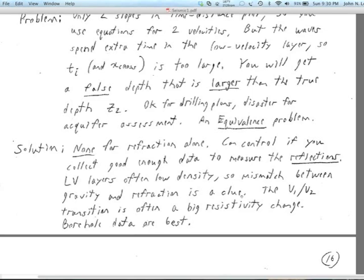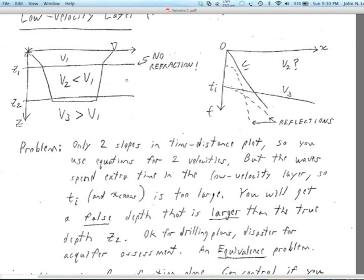Low velocity layers are often low density. So if you calculate basin depths using refraction, and then you calculate basin depths using gravity, and you get a mismatch, well, that could be a clue that something is wrong. Also, the way we often solve this in the Great Basin is that the low velocity layer, and the top of the low velocity layer, is often the top of a tertiary lake bed sequence. And it's full of clay, it may be salty. So its seismic velocity is low, but of course, refraction can't see that.